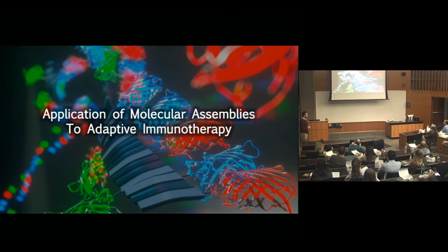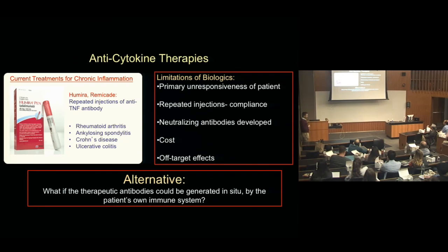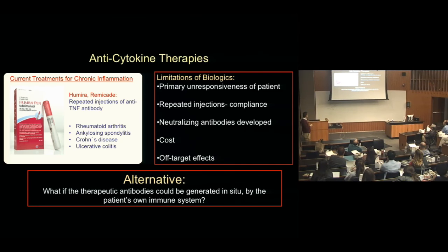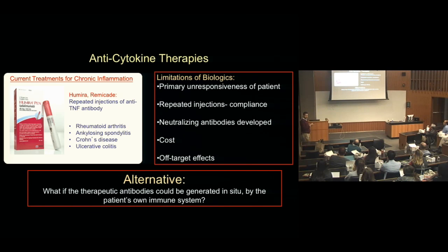One application I want to dive into with more detail is adaptive immunotherapy. Right now, if you have a chronic inflammatory condition like rheumatoid arthritis, ulcerative colitis, or Crohn's disease, the main treatment is an anti-TNF antibody — tumor necrosis factor. Humira is the poster child, made by AbbVie. It's one of the most blockbuster pharmaceuticals ever. However, it has limitations: 15-20% of patients are non-responsive from the start, and repeated injections every two weeks or month for the duration of the disease cause compliance issues.